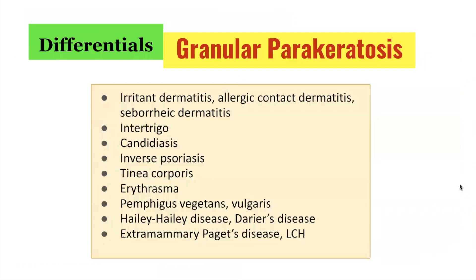The differential diagnosis of granular parakeratosis includes various forms of dermatitis such as irritant dermatitis, allergic contact dermatitis, and seborrheic dermatitis. Other differentials include intertrigo, candidiasis, inverse psoriasis, tinea corporis, erythrasma, pemphigus vegetans or pemphigus vulgaris, Hailey-Hailey disease, Darier's disease, extramammary Paget's disease, and Langerhans cell histiocytosis (LCH).